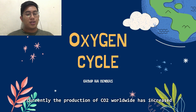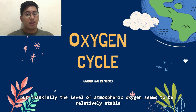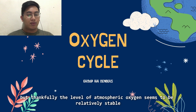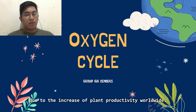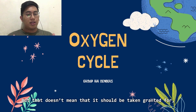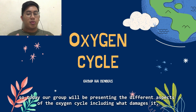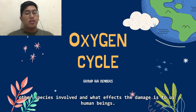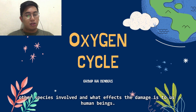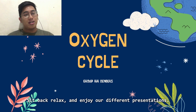Currently, the production of CO2 worldwide has increased. But thankfully, the level of atmospheric oxygen seems to be relatively stable due to the increase of plant productivity worldwide. But that doesn't mean it should be taken for granted. So today our group will be presenting the different aspects of the oxygen cycle, including what damages it, other species involved, and what effects the damage has on us. So sit back, relax, and enjoy.